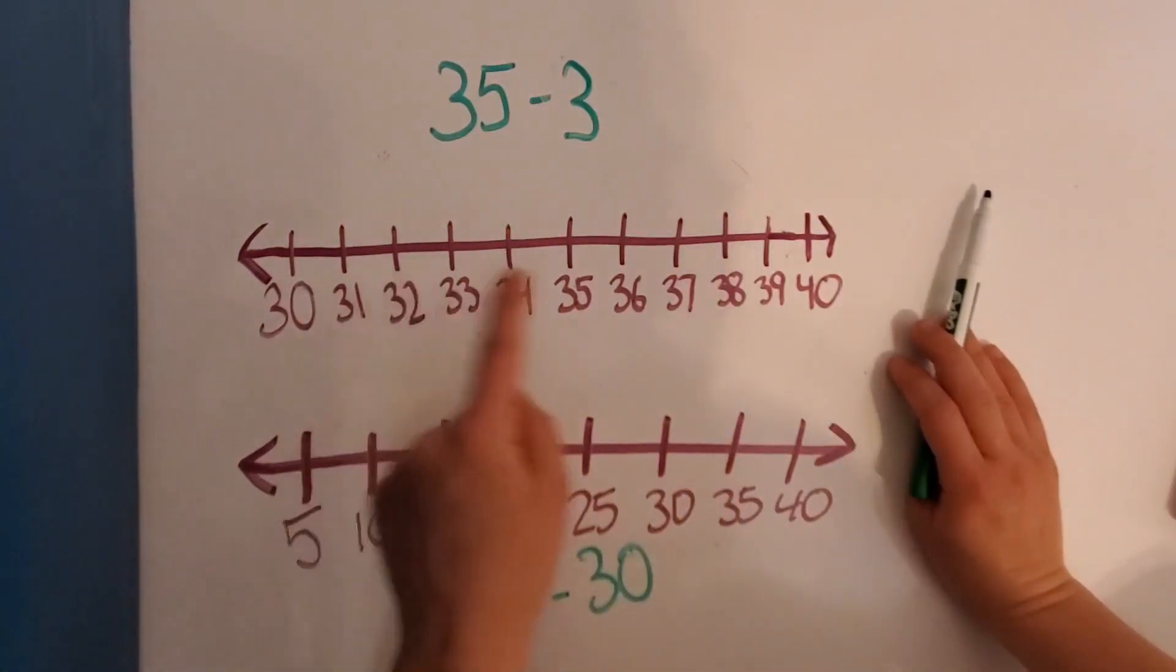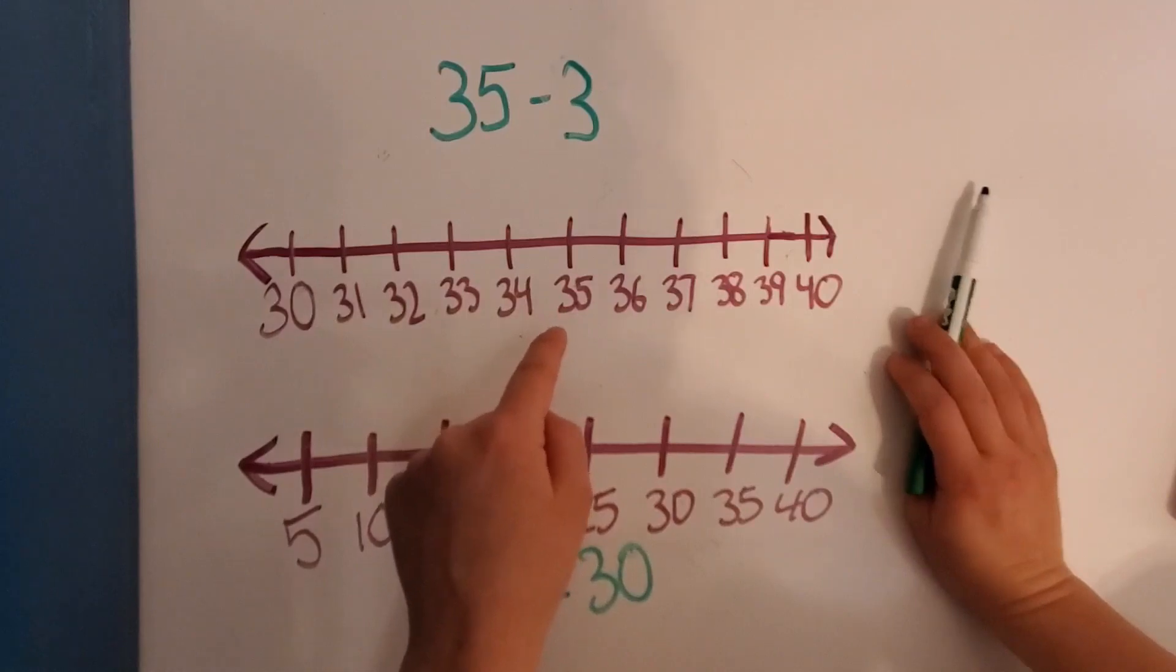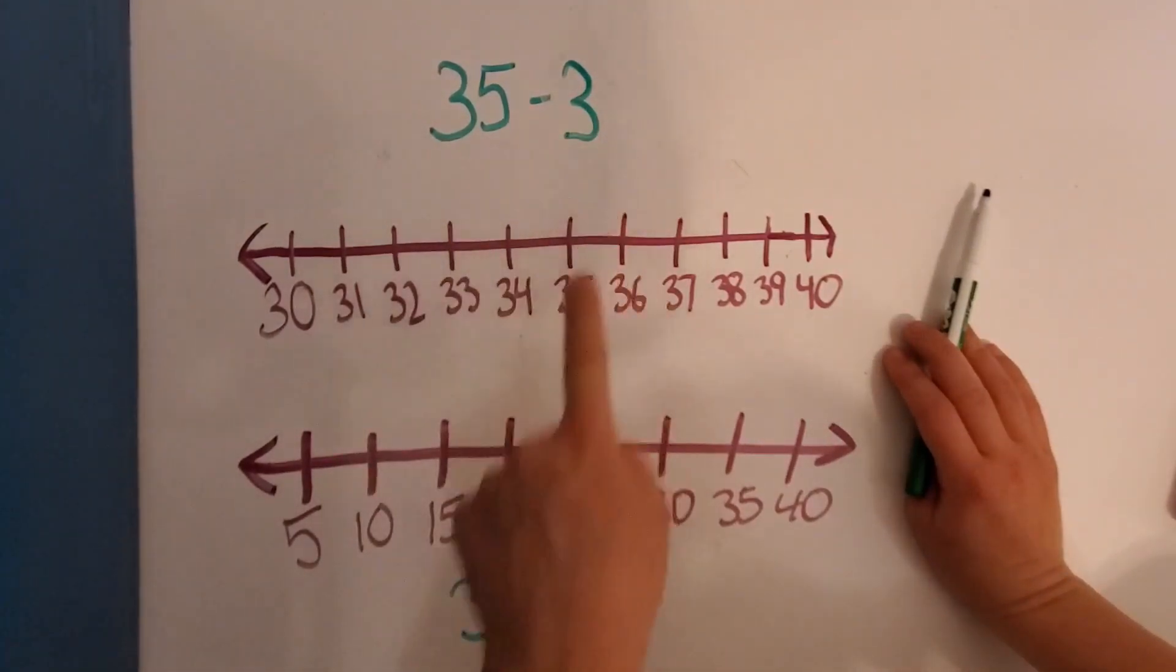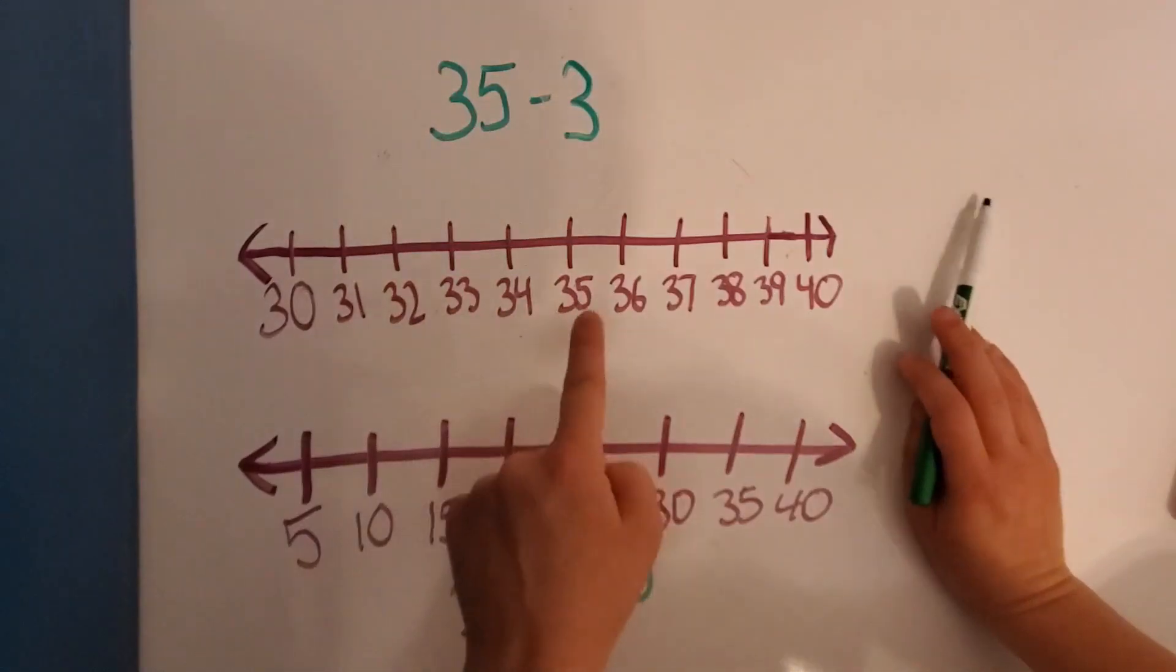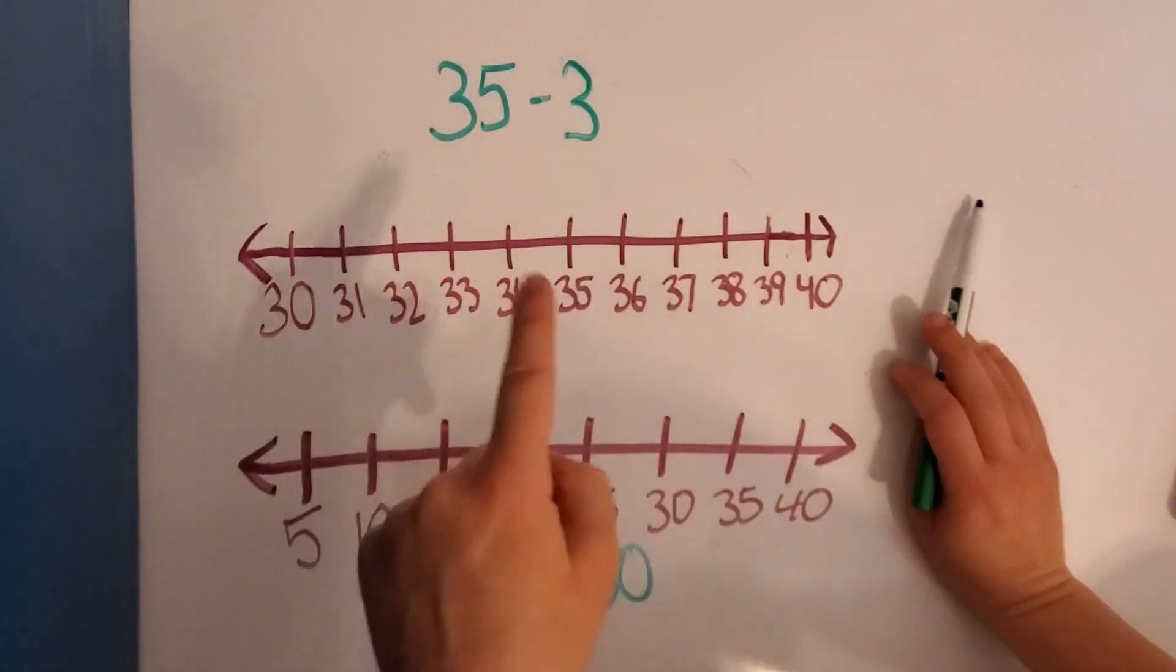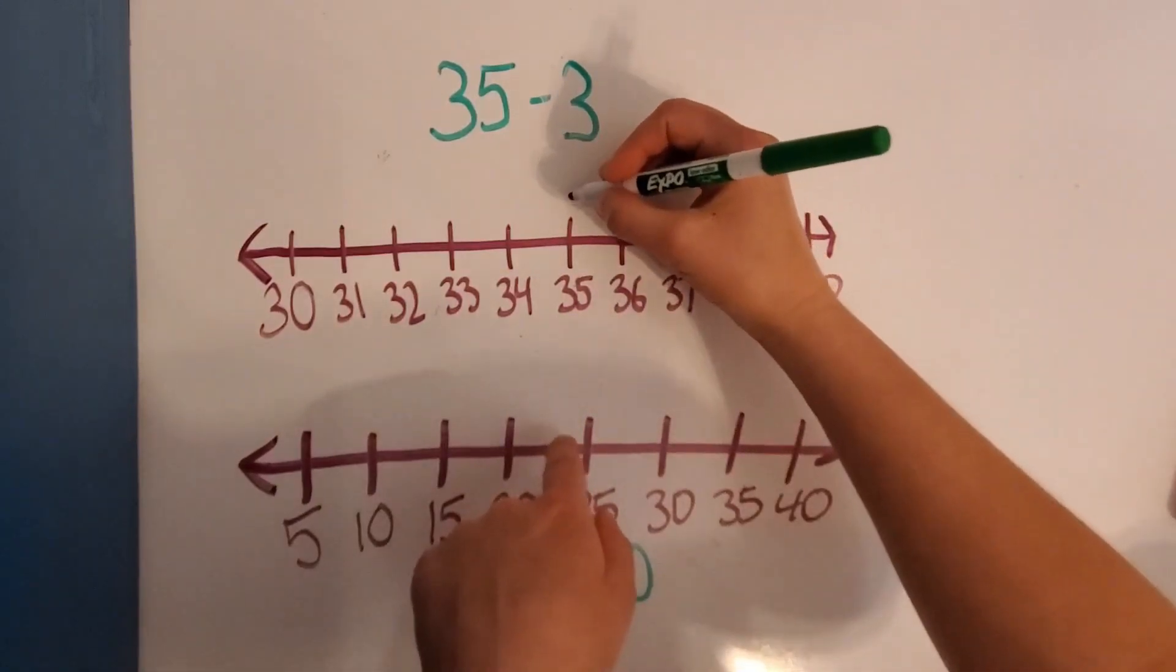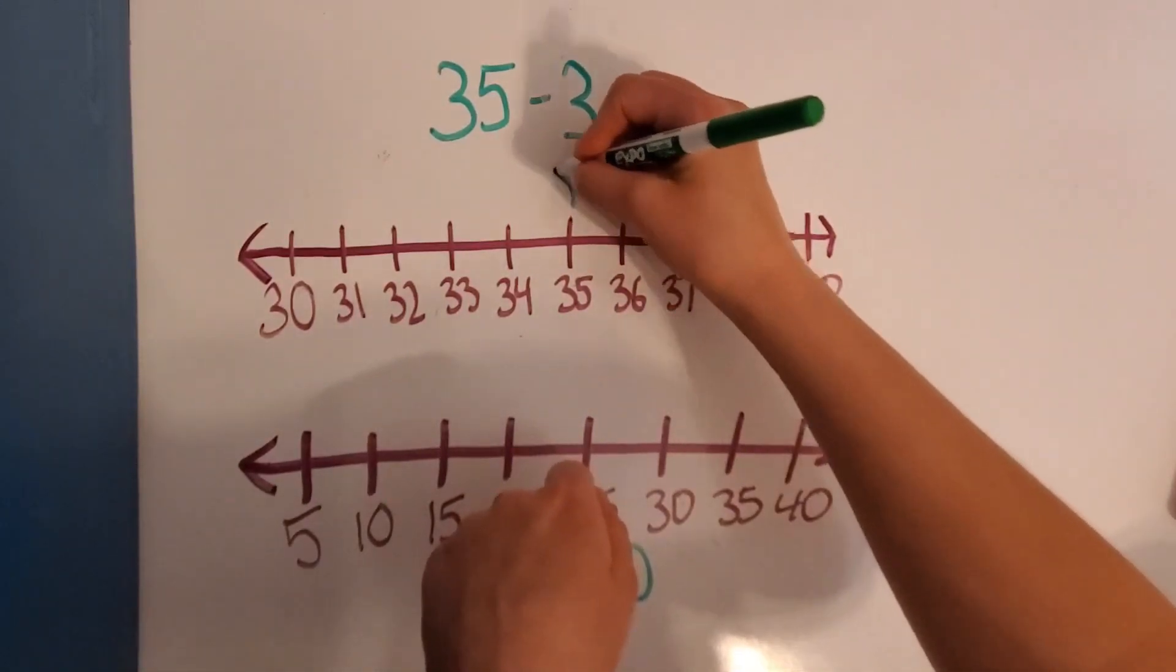Alright? So we subtract mentally by counting back. So when we subtract 35 minus 3 mentally, that means we start at 35 and we count back by 1's. So let's start at 35 right here and we'll count back by 1's.